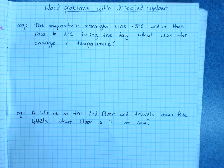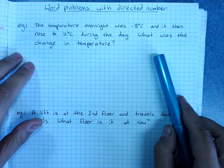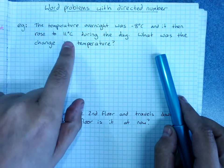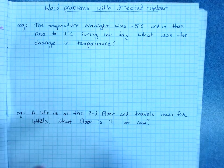Word problems with directed number. For example, the temperature overnight was negative 8 degrees Celsius and it then rose to 11 degrees Celsius during the day. What was the change in temperature?